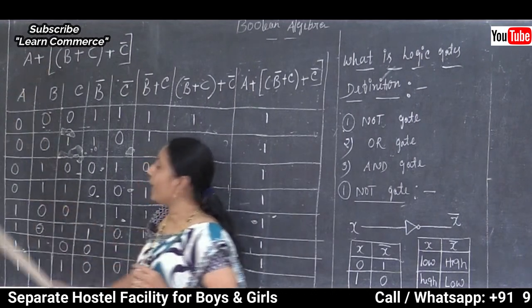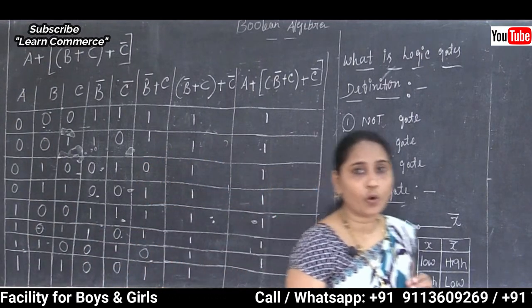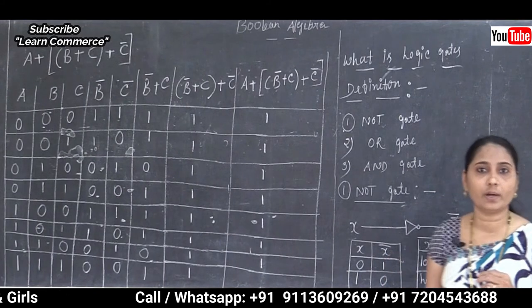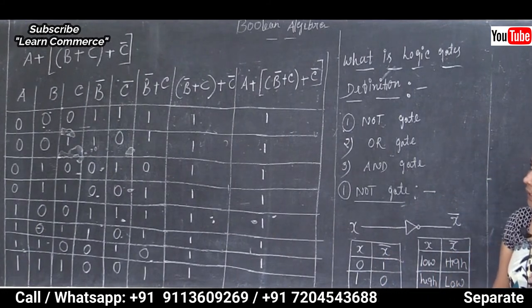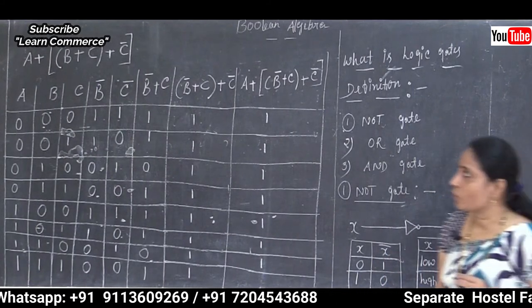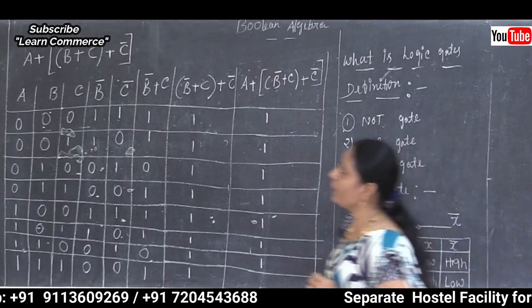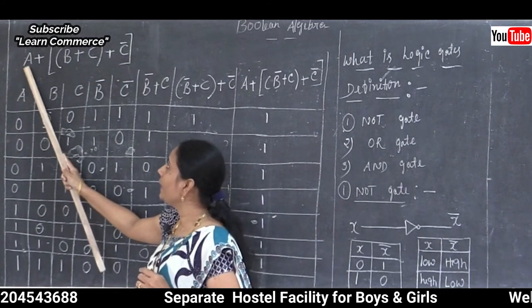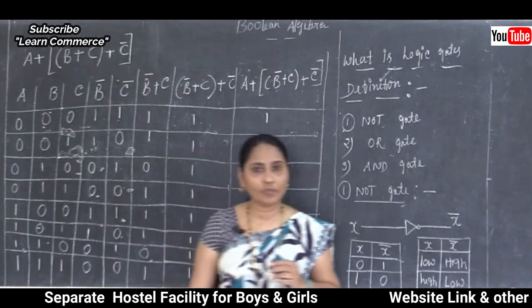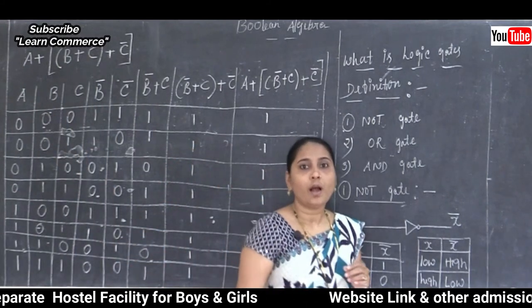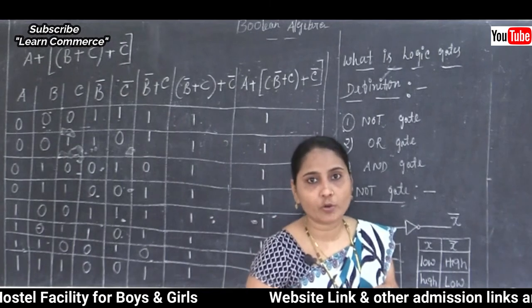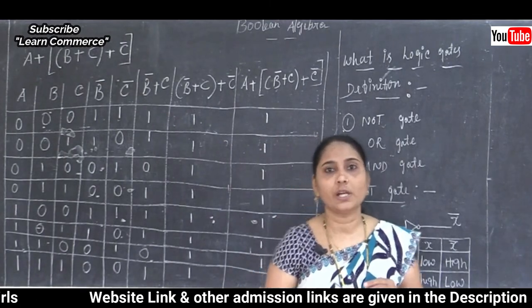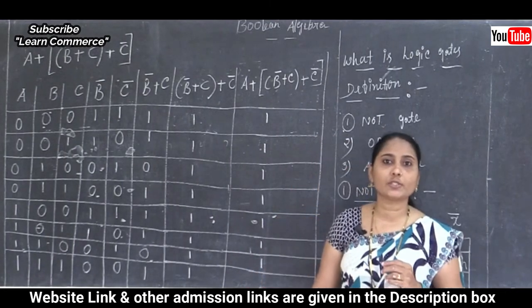First of all, we count how many variables are in our question. Totally in this question, three variables are there — A, B, and C. We need to determine how many values we need and which truth table to use to solve this.